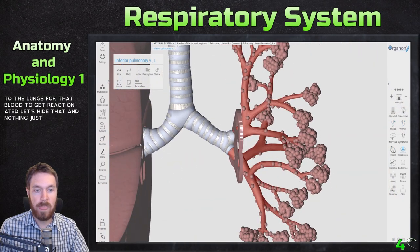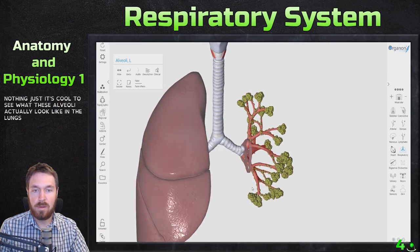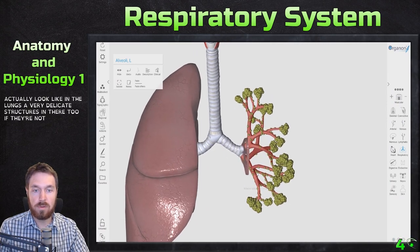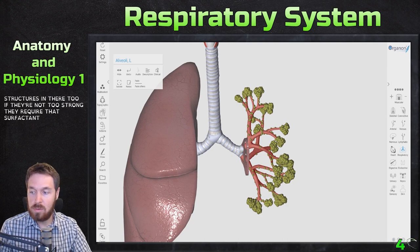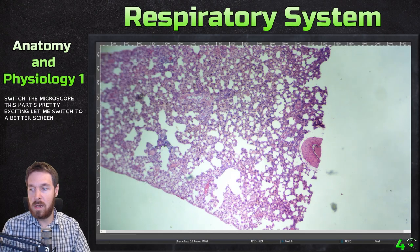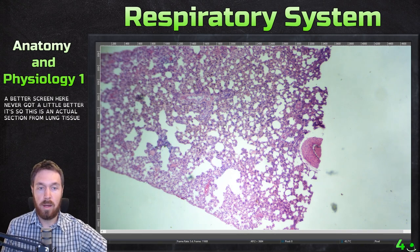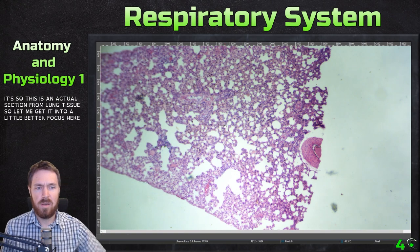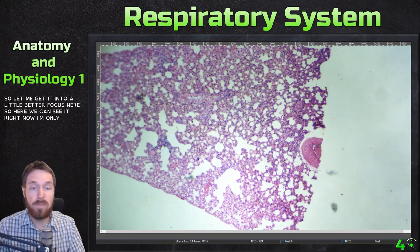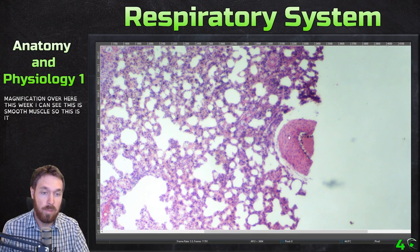It's cool to see what the alveoli actually look like in the lungs — they're very delicate structures that require surfactant to stay together. Now let's switch to the microscope — this part is pretty exciting. This is an actual section from lung tissue. At 40x magnification I can see smooth muscle here, which indicates a blood vessel — probably an artery because the wall looks muscular.